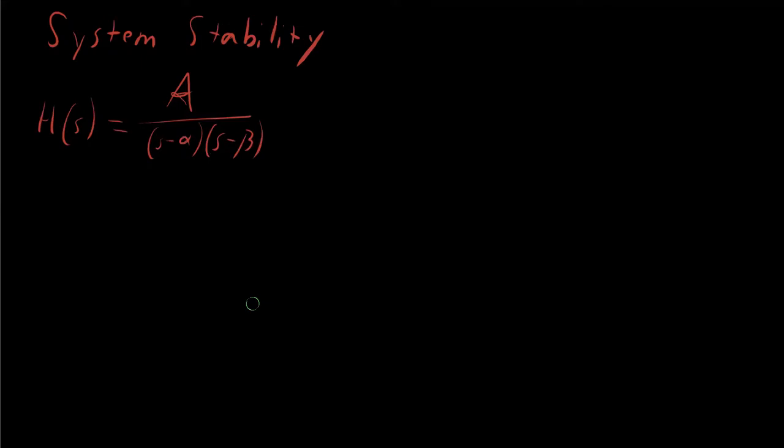Now, there are no zeros in this transfer function because there's no s up here. And there are two poles, alpha and beta, which are the poles.